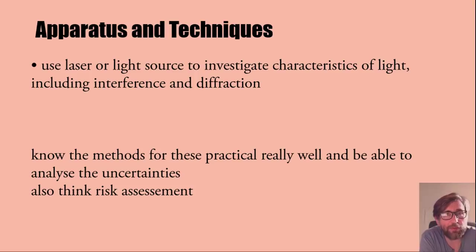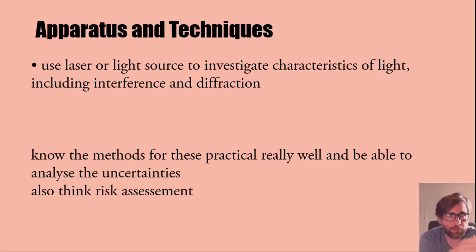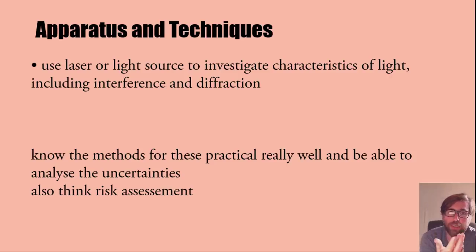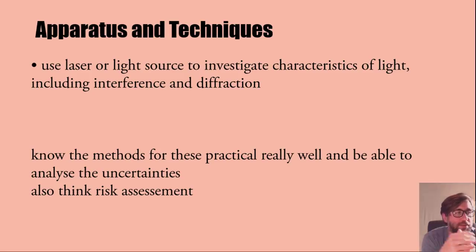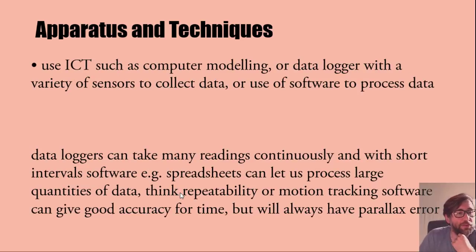For measuring sound wavelength it's harder — you'd use a microphone moved through the sound wave to find points in phase with the signal, then use a ruler to get the wavelength. For laser light, this covers the diffraction grating or Young's slits interference practical. Know the methods really well and be able to analyze the uncertainties. Your angle comes from two measurements of length, so when compounding uncertainty, your angle has the same percentage uncertainty as the sum of the percentage uncertainties in those two sides.